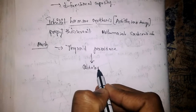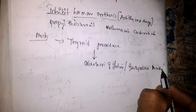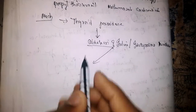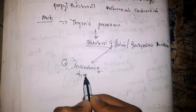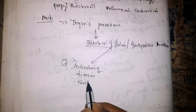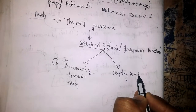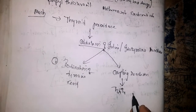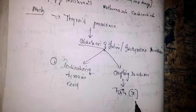Due to inhibition of thyroid peroxidase, oxidation of iodine and iodine-tyrosine residues will not happen. Due to inhibition of this oxidation, two things get inhibited: iodination of tyrosine residues will not happen, and the coupling reaction will also not happen.